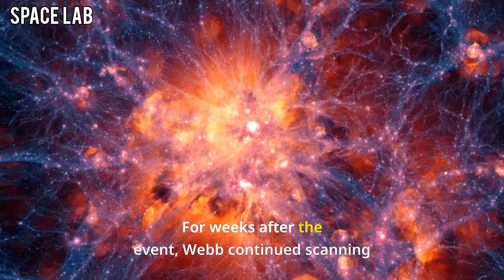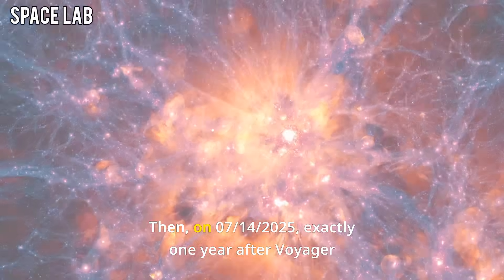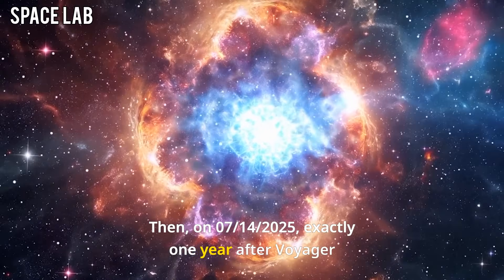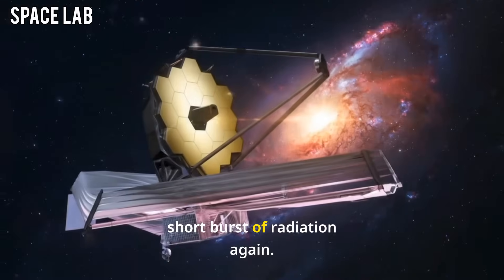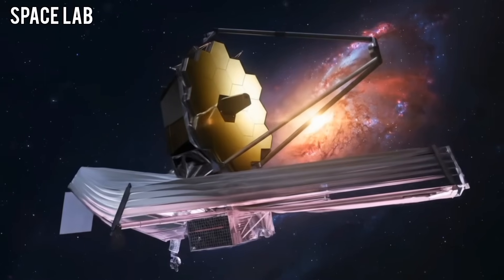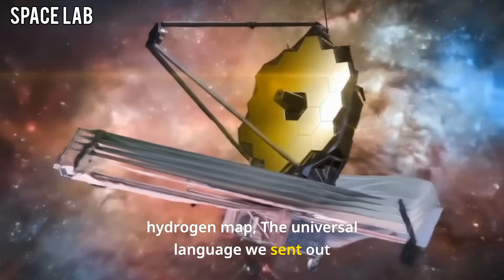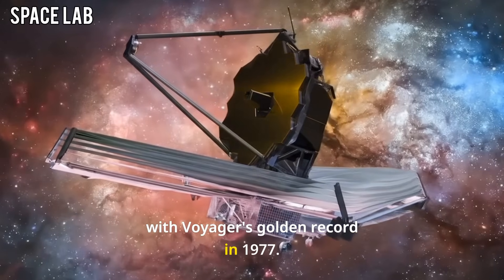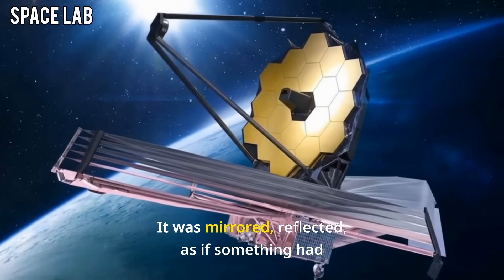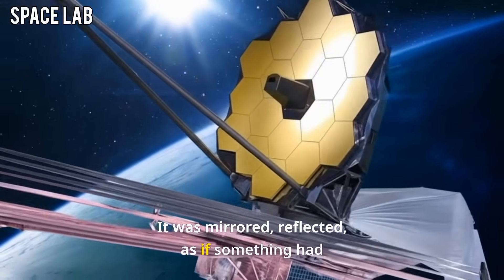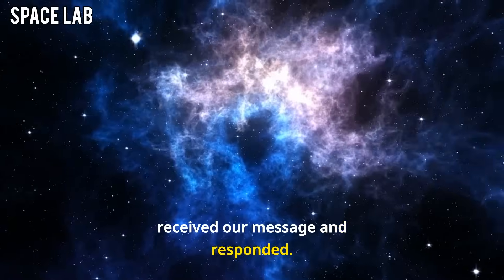For weeks after the event, Webb continued scanning the region. Then, on July 14th, 2025, exactly one year after Voyager 1 received a similar signal, Webb recorded a short burst of radiation again. This time, the encoded image resembled Earth's own hydrogen map, the universal language we sent out with Voyager's golden record in 1977. It was mirrored, reflected, as if something had received our message and responded.